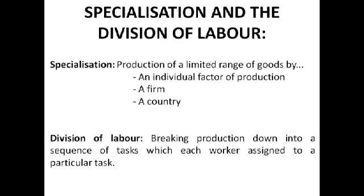The division of labour is when you break down production into a sequence of tasks and each worker is assigned to a particular task. For example, if we're producing a bucket, one worker would melt the metal and put it into shape, the next worker might paint it, the next might add a handle, and so on. Doing it this way is a lot quicker than having one worker do the whole lot, because workers become particularly focused on their area of the task, making the whole process much quicker, faster, and cheaper — so that saves money and time.